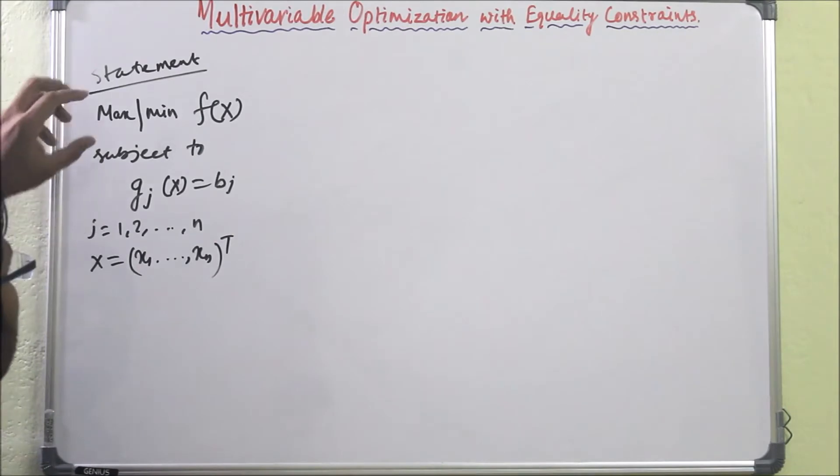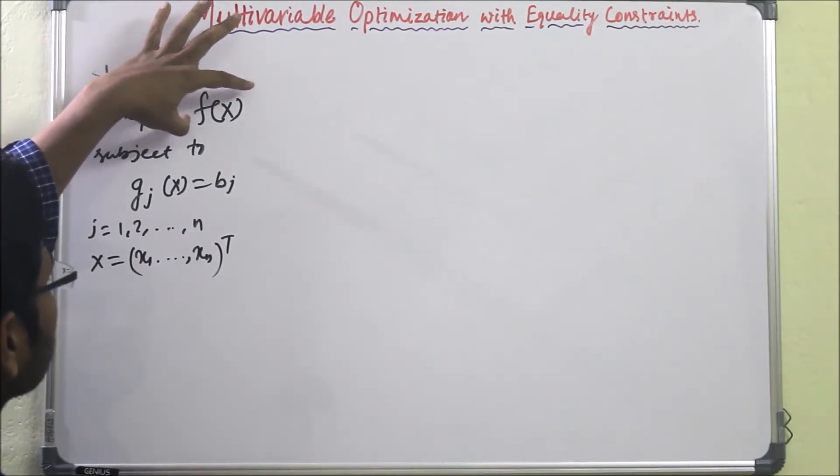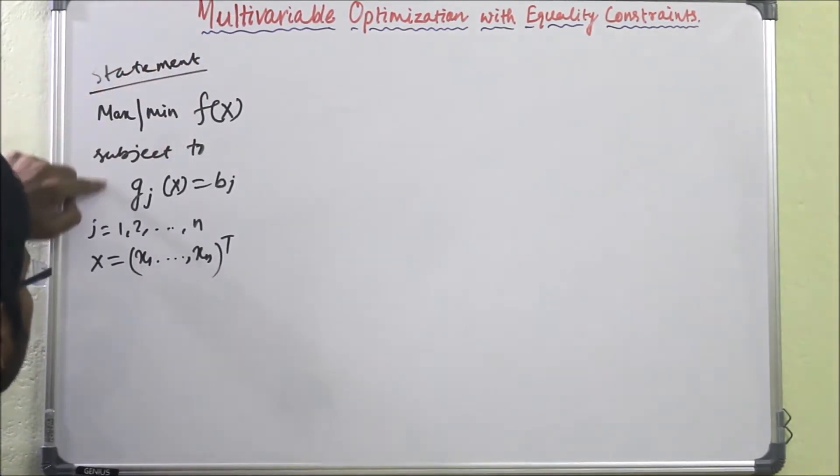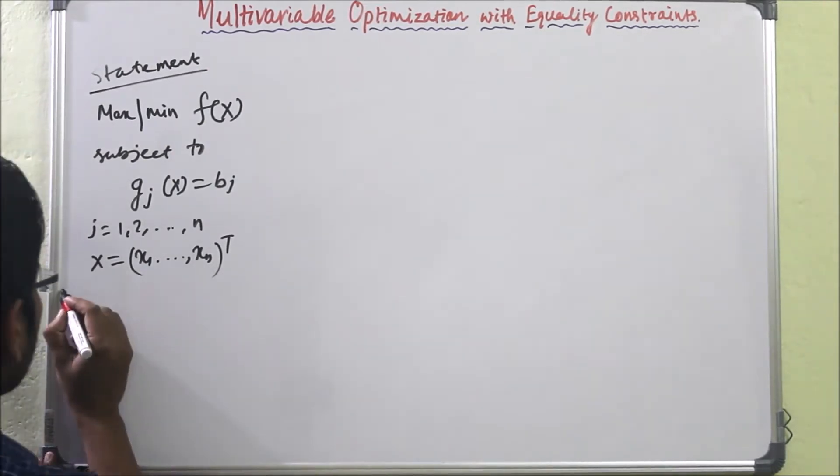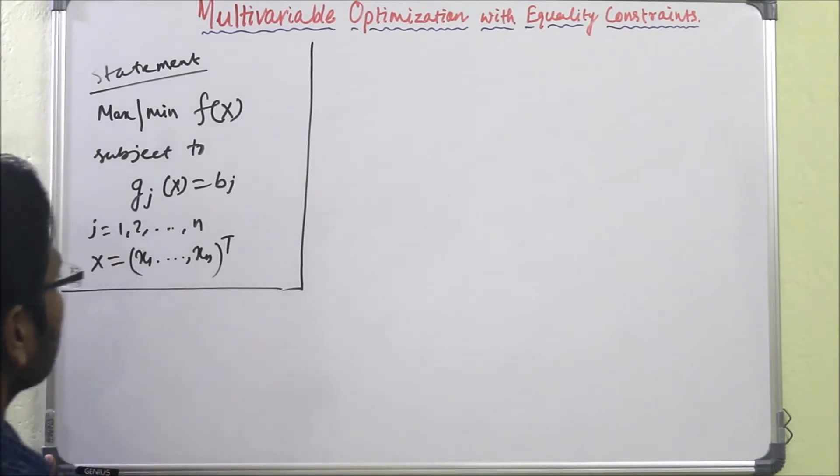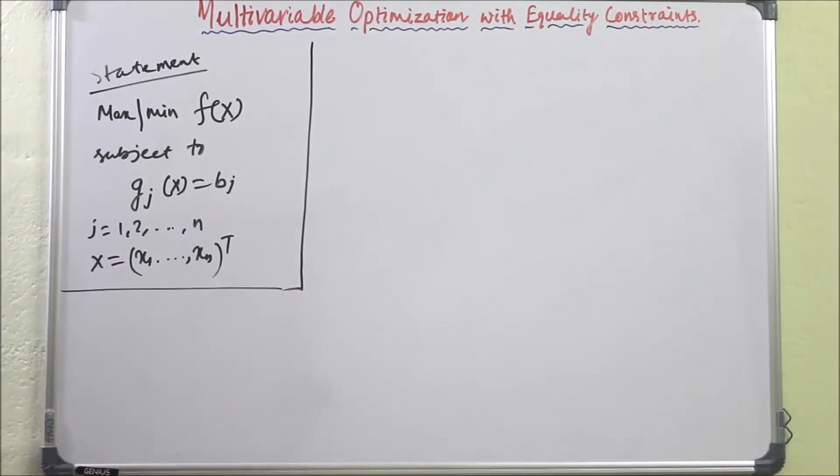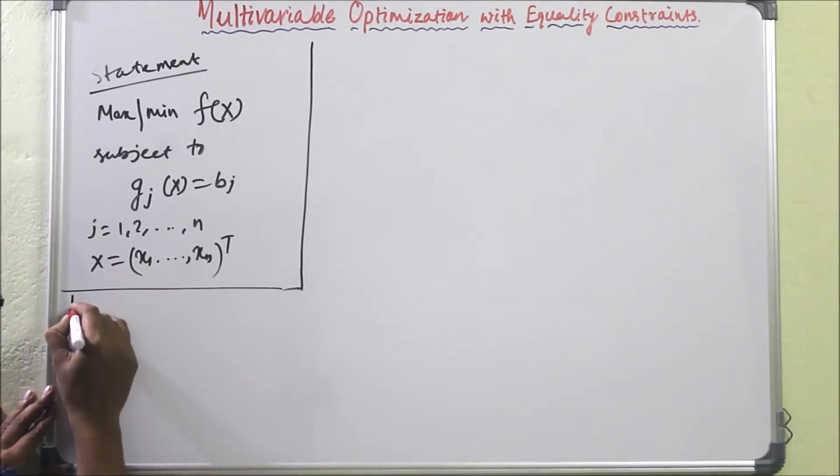This suggests that this function we have to optimize depends on n variables. So this is our problem. Now how to solve this?